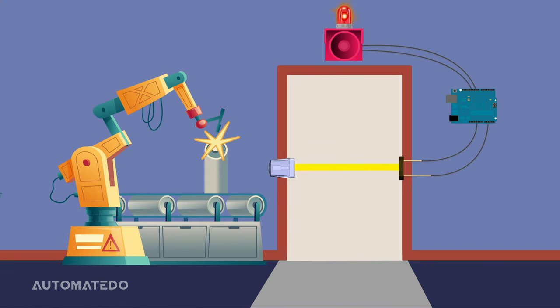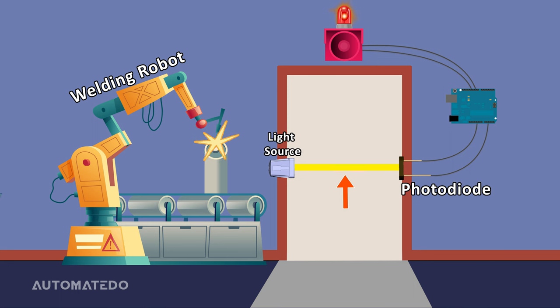Finally, let us explore an application where the photodiode is used in an alarm system. Here we have a welding robot and we do not want anyone to be present when the welding operation is going on since it may cause injury to the personnel. Also, a photodiode installed in the entryway receives illumination from a light source. Thus, as long as the light beam is not disrupted, the photocurrent will keep flowing.